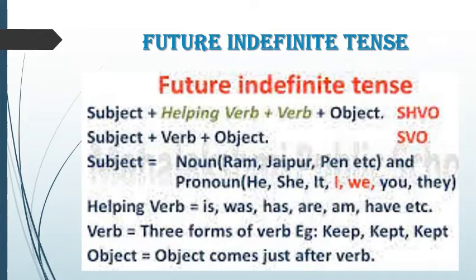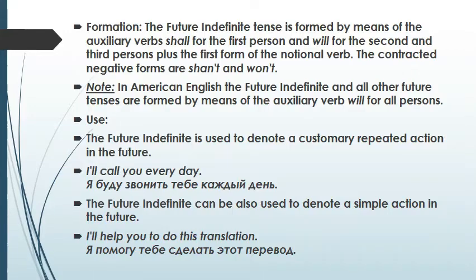Today's grammar theme is Future Indefinite Tense. Future Indefinite Tense is formed by means of the auxiliary verb 'shall' for the first person, and 'will' for the second and third persons, plus the first form of the notional verb. The contracted negative forms are 'shan't' and 'won't'. In American English, the Future Indefinite and all other future tenses are formed by means of the auxiliary verb 'will' for all persons.